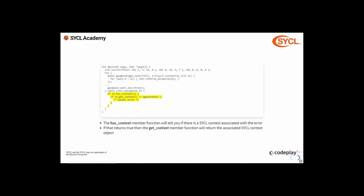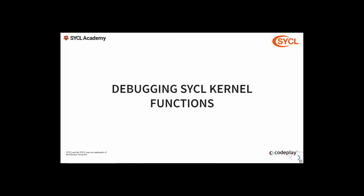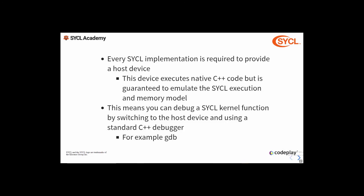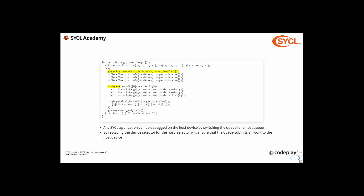Most exceptions will also have a context associated with them. The has_context member function will tell you whether there is a context associated with the error, and if it returns true, you can call get_context to retrieve that context. Finally, to debug SYCL kernel functions: since every SYCL implementation must provide a host device, SYCL kernel functions can be debugged using a standard C++ debugger such as GDB, LLDB, or Visual Studio. To do this, you simply use the host selector when creating your queue and kernel functions will run on the host device.